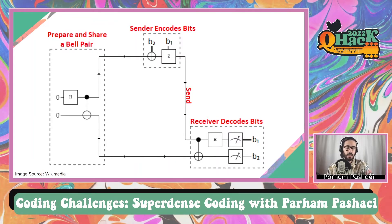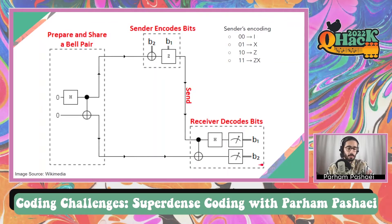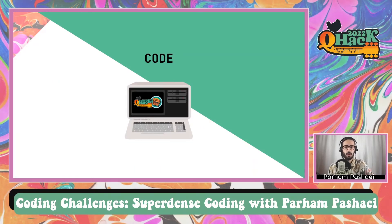For encoding the bits, Alice has to use a protocol — this information is given to you in the coding challenge statement. For example, if she wants to send 00 she can use the identity operator for encoding, and so on for other classical bits she wants to send. Then once the information is sent to the receiver, or Bob, they need to decode the bits using a CNOT gate and a Hadamard gate. Finally there is the measurement, and the classical bits you get as the output. In this coding challenge we have to figure out what is the probability of transmitting our bits successfully.